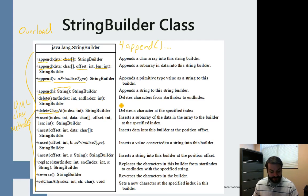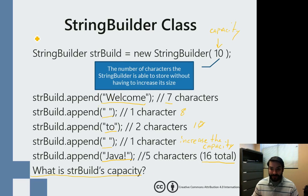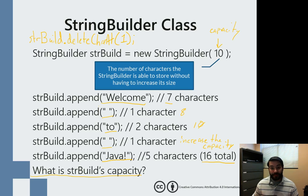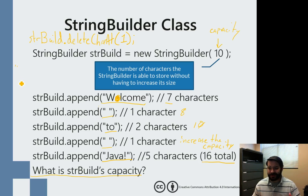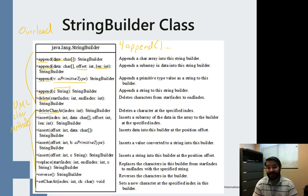If I look at this string and come in and call strBuild.deleteCharAt(1), what happens? That 'E' goes away, and my string suddenly — without having to create something new, make a substring, or concatenate — it becomes 'Wlcome to Java' without the E. No E. That's pretty nice if you think about it.